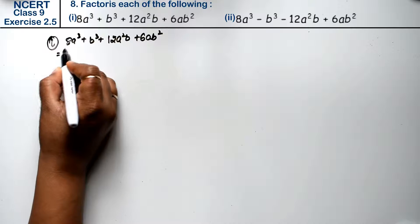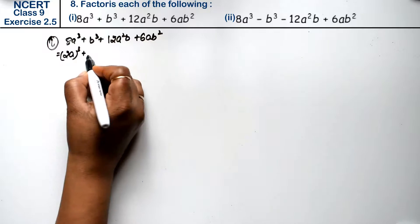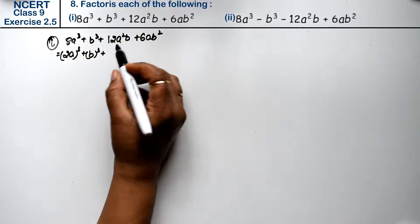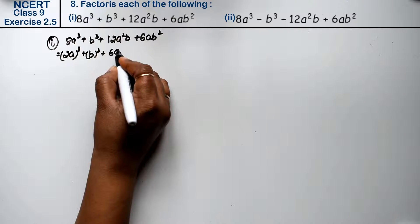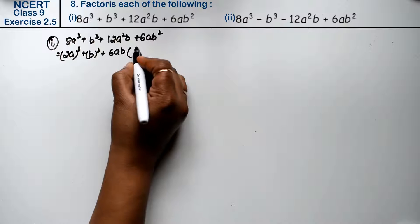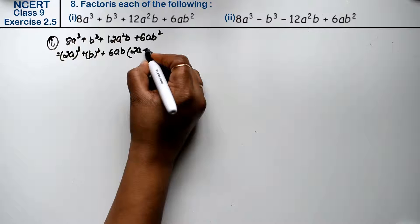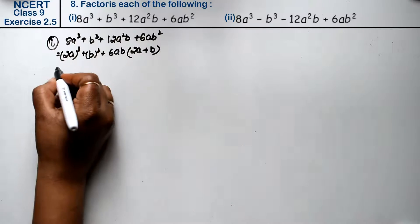Now see, friends. This is a whole cube, this is a whole cube, this is a whole cube. Now see what is common — 6 is common, a is common, and b is common. So what is added in the second part? 2a has been added because 1a and 1b have been added, so 2 was added, plus this is b.